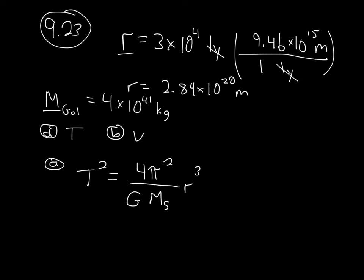This equation is for a planet or other object orbiting the sun, so it uses the mass of the sun because the sun's gravity keeps you in orbit. We can adjust this equation — it works for any circular orbit, including orbiting the galaxy. In the case of the galaxy, the mass of the galaxy is keeping everything in orbit, concentrated at the center. So we replace M_sun with the mass of the galaxy.